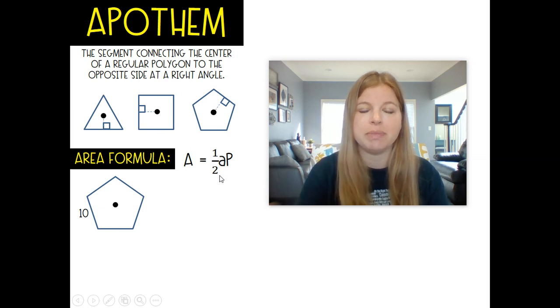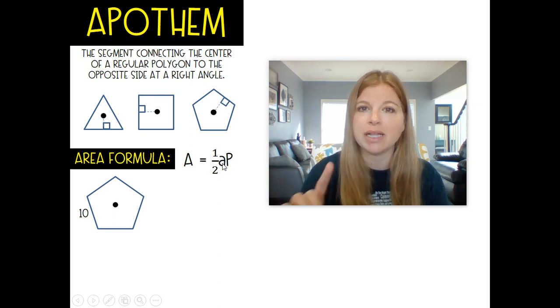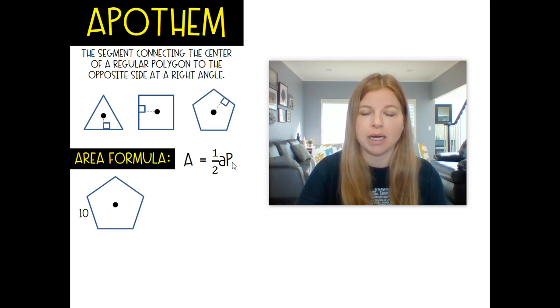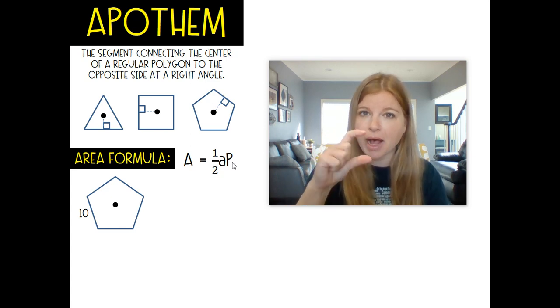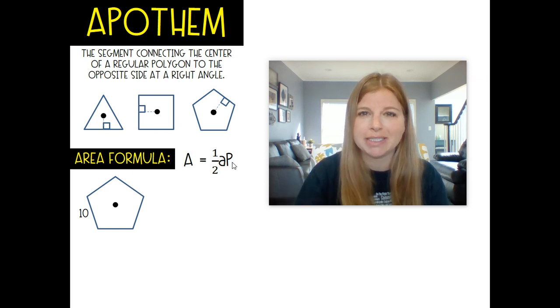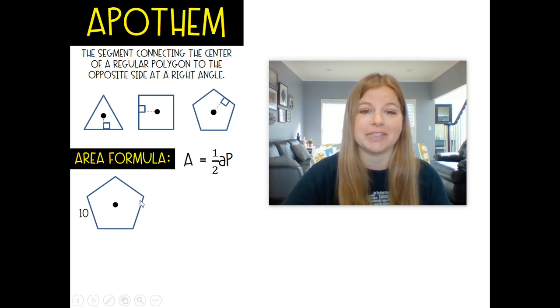We need that apothem because here is what the area formula is: area equals one half times that apothem a, multiplied by p, and p is the perimeter of the entire polygon. So I need two numbers, the apothem of my figure and the perimeter. Sometimes calculating the area or perimeter does take quite a bit of work.